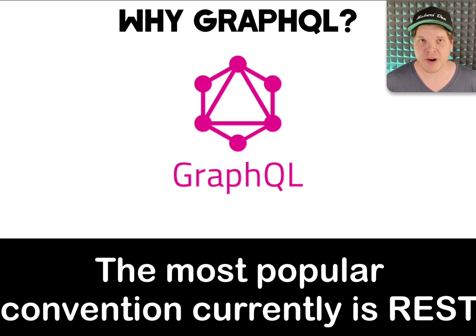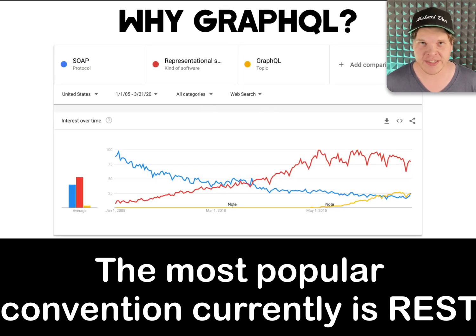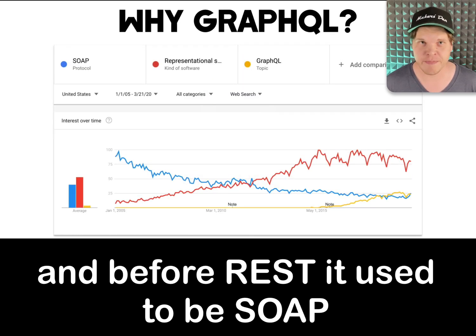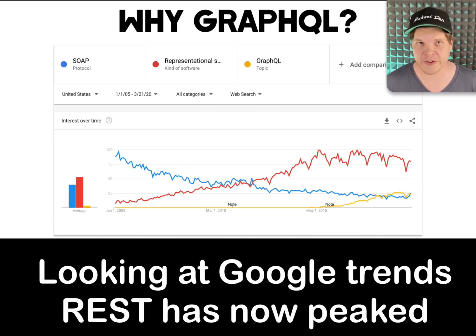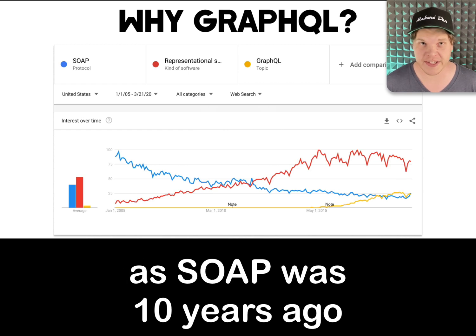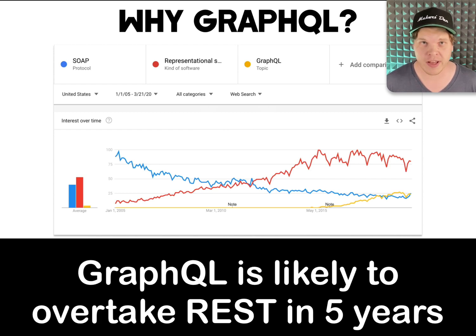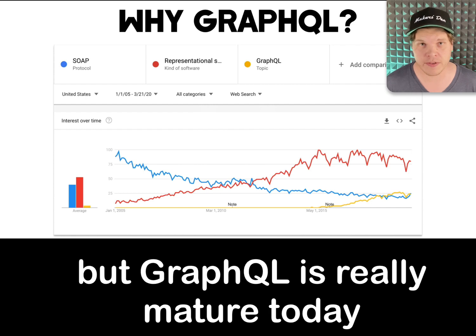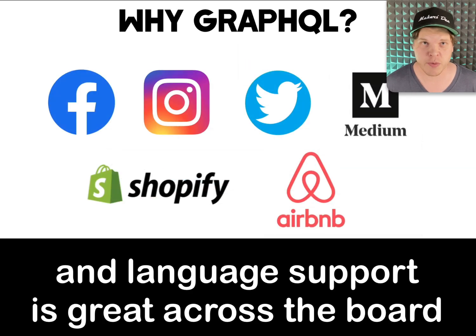The most popular convention currently for creating APIs is REST. And before REST, the most popular API standard was SOAP. Looking at Google Trends, REST has now peaked and is on the same downward spiral as SOAP was a decade ago. GraphQL is likely to overtake REST in five years. But GraphQL is really mature today and language support is great across the board.